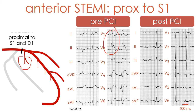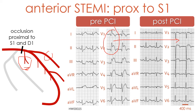In this case, the occlusion was proximal to both S1 and D1, and the right bundle branch block disappeared after the percutaneous intervention with stent implantation. The development of right bundle branch block in relation to an anterior STEMI indicates that the site of occlusion is proximal to the most important septal branch, which is usually the first septal branch that supplies blood to the intraventricular conduction system.